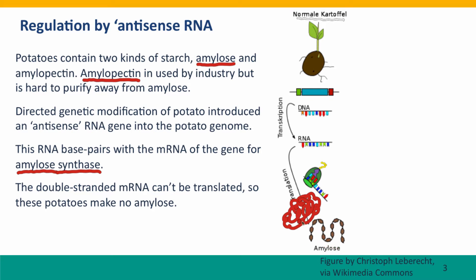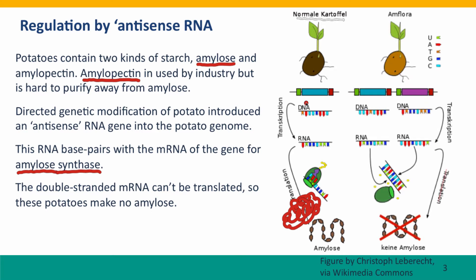The engineers wanted to turn off the gene for synthesizing amylose, but rather than turning off the gene directly, instead they turned off the messenger RNA. What they did was they added into the plant's genome a new gene that was basically an inverted copy of the normal gene for amylose — not the whole gene, just part of the gene — so that when this gene is transcribed, it makes a molecule of RNA that's complementary to the messenger RNA.